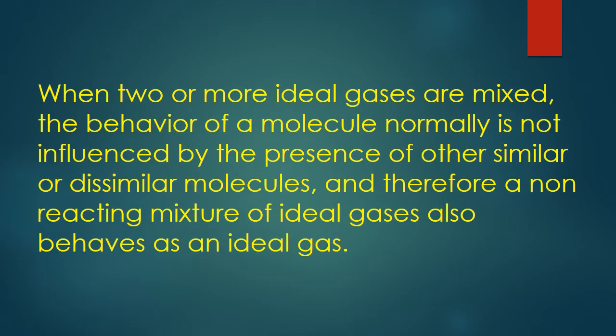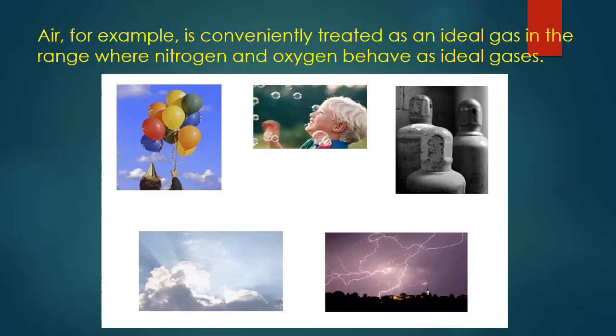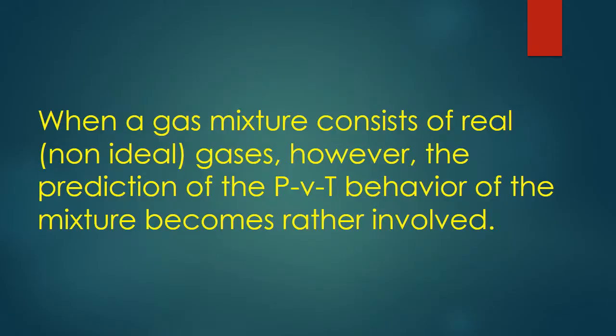When two or more ideal gases are mixed, the behavior of a molecule is not influenced by the presence of other similar or dissimilar molecules, and therefore a non-reacting mixture of ideal gases also behaves as an ideal gas. For example, air is conveniently treated as an ideal gas in the range where nitrogen and oxygen behave as ideal gases.